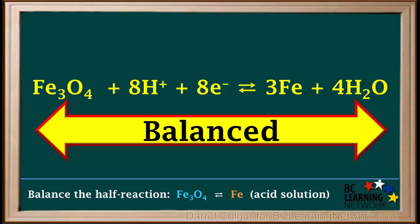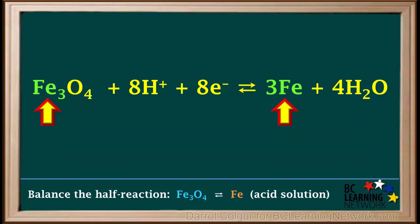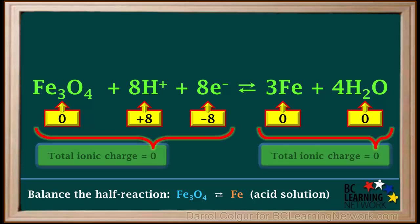This half reaction is now balanced. Whenever you finish balancing any equation, it always pays to double check atoms and charge at the end. We see that there are 3Fe atoms on both sides, 4O atoms on both sides, and 8H atoms on both sides. And the charges on both sides add up to the same value, so the charge is also balanced.